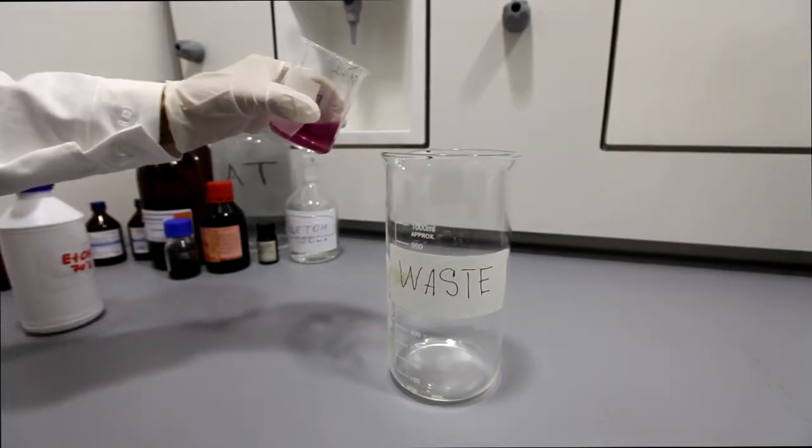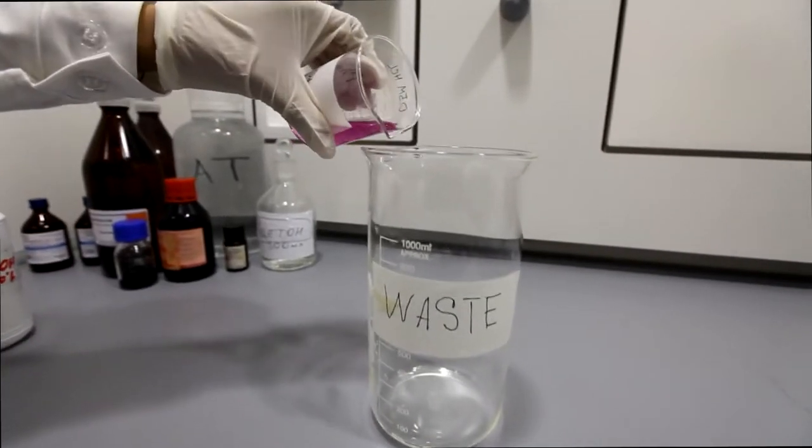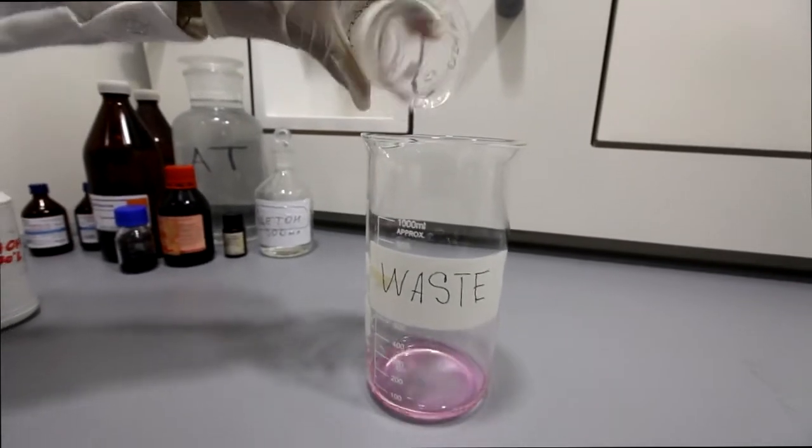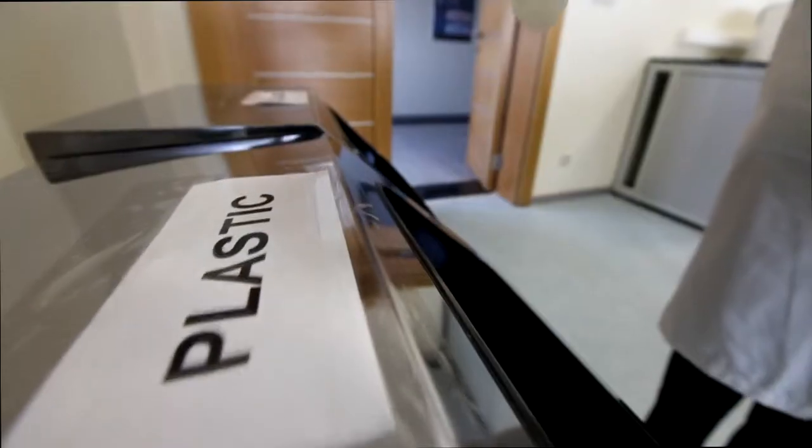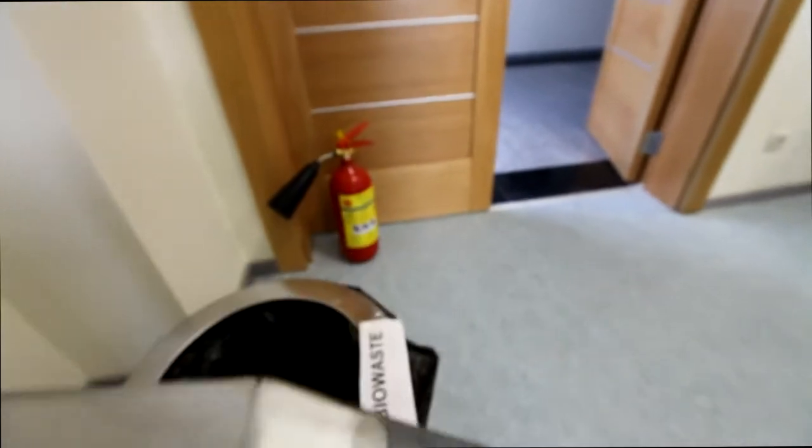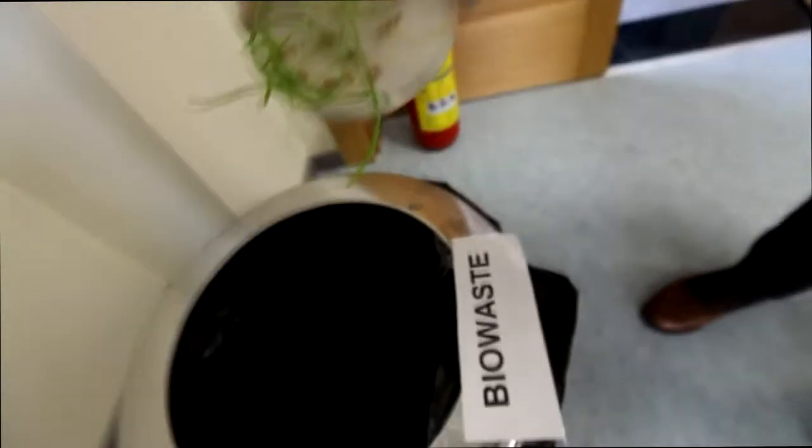Dispose of waste properly. Different types of containers will be provided. Dispose chemical waste in the beaker provided for this purpose. Plastic should be thrown into the bin for plastic, glassware into the bin for glass. Bio waste should be disposed in the container for bio waste.